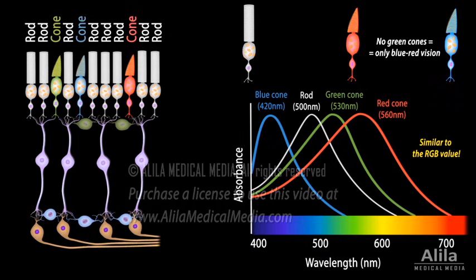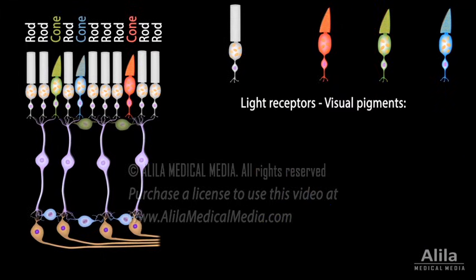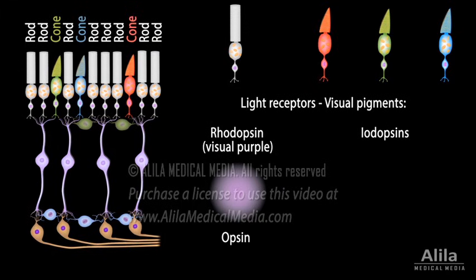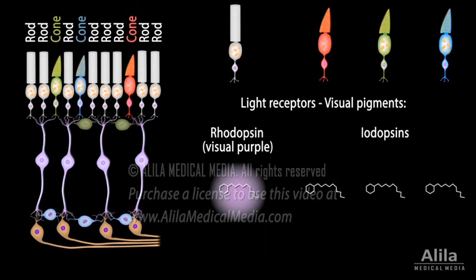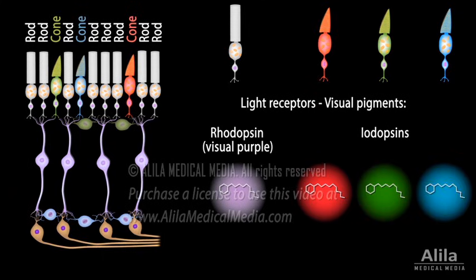The ability of photoreceptor cells to detect light is due to their light receptor molecules called visual pigments — rhodopsin in rods and iodopsin in cones. These molecules consist of two components: a protein called opsin and a vitamin A derivative called retinol. The retinol component is identical for all visual pigments, but the opsin is different for rods and each type of cone. Different opsins absorb different wavelengths, allowing detection of different colors.